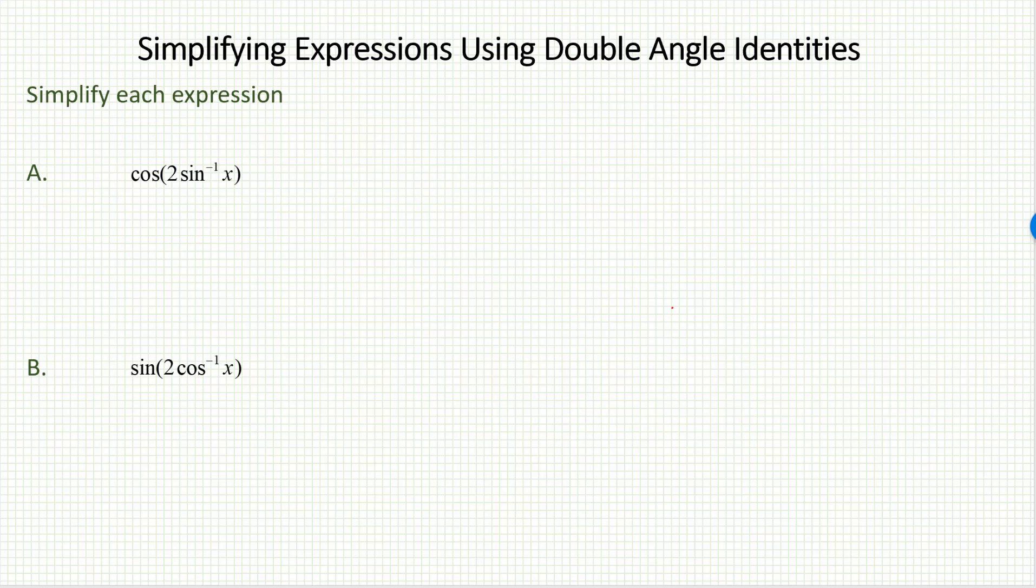Simplifying expressions using double angle identities. So take a look at this first example. Cosine of 2 times sine inverse x.